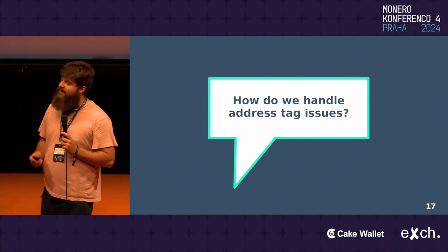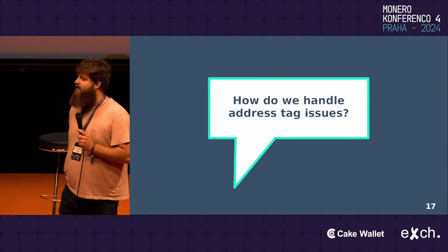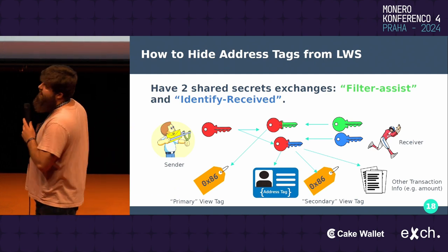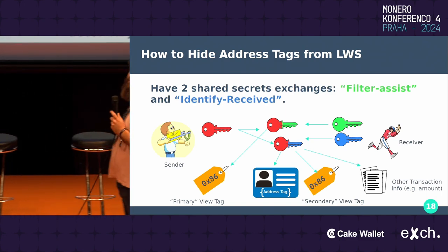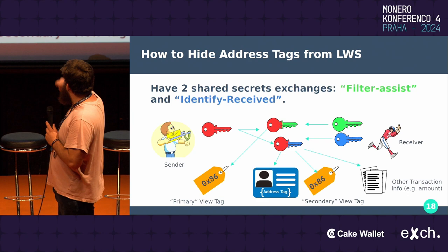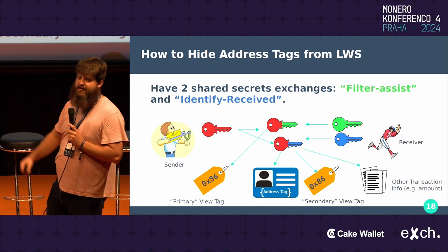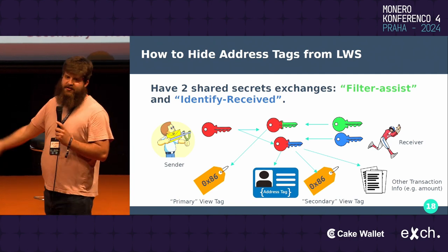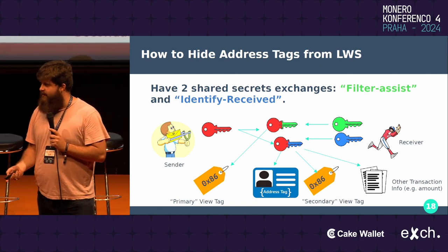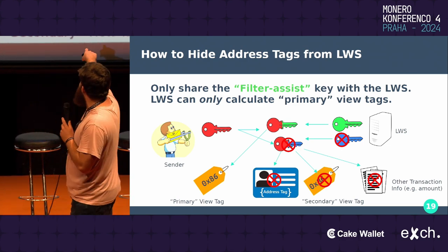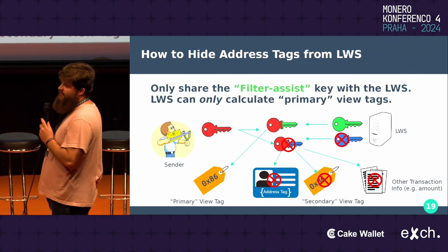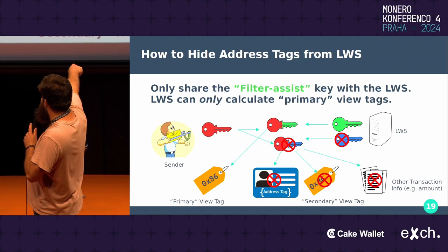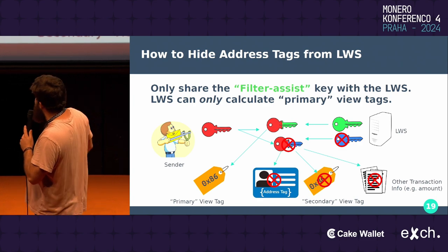So let's talk about how we can fix some of these. Going back to that original example, this is how the new version would work. As you can see, there are two shared secrets now — before there was one. The first one only unlocks the primary view tag, and then there's a secondary view tag. The second key unlocks all the other transaction information in that secondary view tag. What you would do is give the first key — the filter assist key — to the LightWallet server and keep the other key private to yourself. Now that they don't have that key, there is no way for them to derive any of the other transaction information.